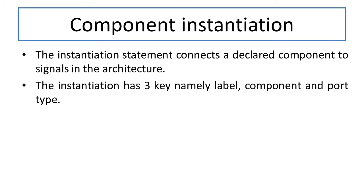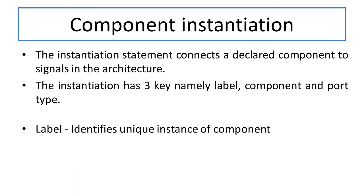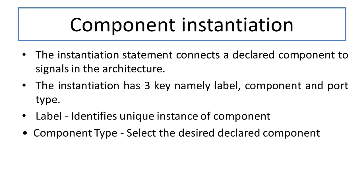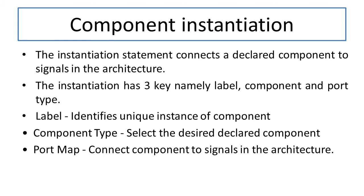Component instantiation has three key terms: label, component type, and port map. Label defines a unique instance of the component. Component type selects the desired declared component — for example, 'and2'. Port map connects the components to signals in the architecture, allowing us to map input and output signals as needed.